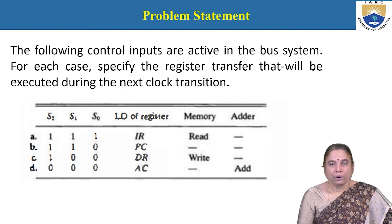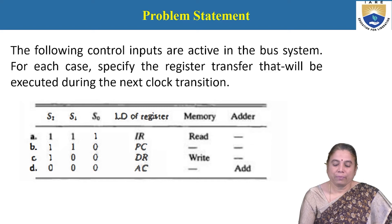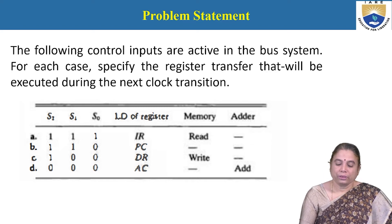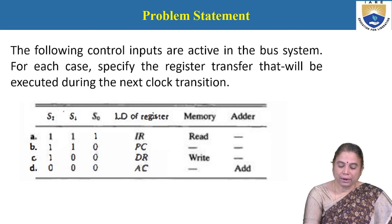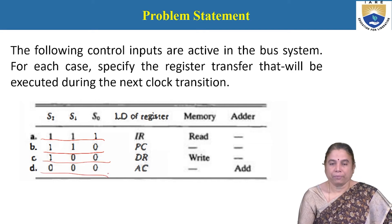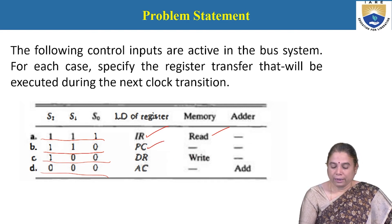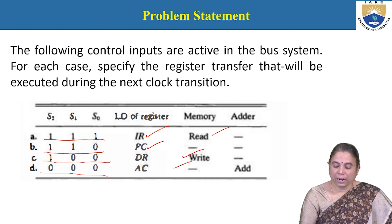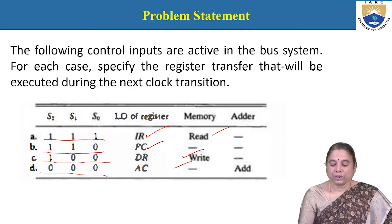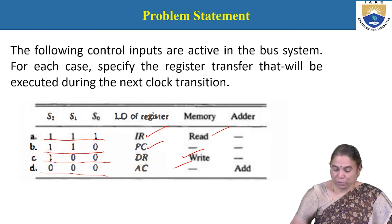Next problem: the following control inputs are active in the bus system. For each case, specify the register transfer that will be executed during the next clock transition. Three selection inputs are considered — S0, S1, and S2 — with values 111, 110, 100, and 000 respectively. Operations include: reading from memory to IR, updating the PC value, write operation to DR, and the accumulator performing an add operation. Register transfer language is used to specify these operations.